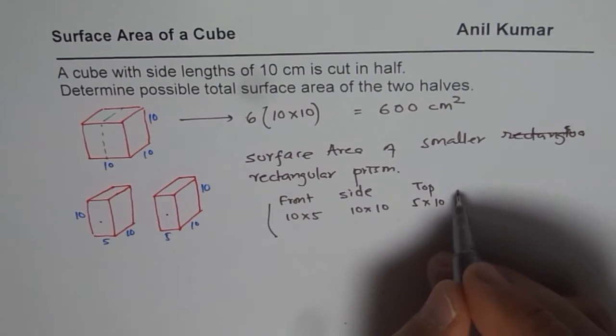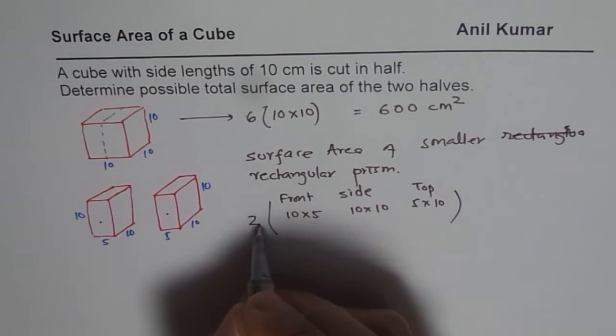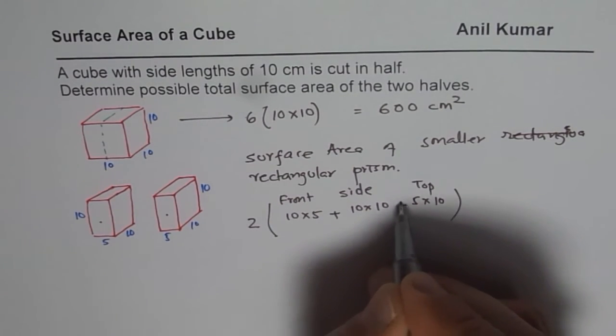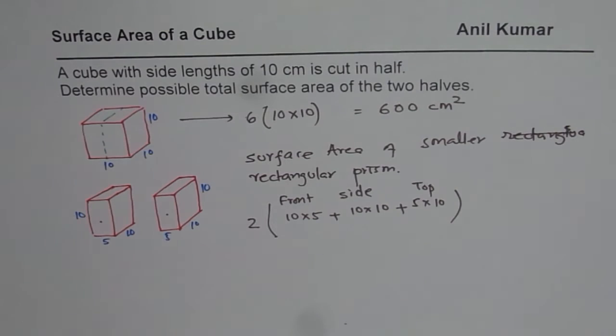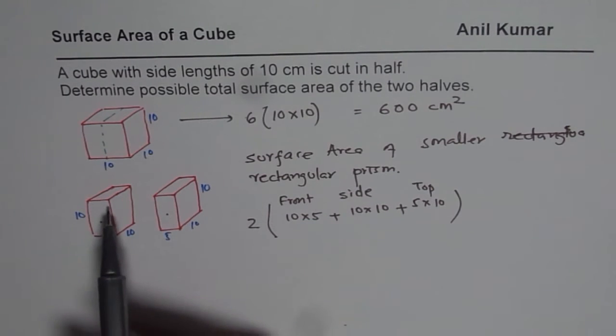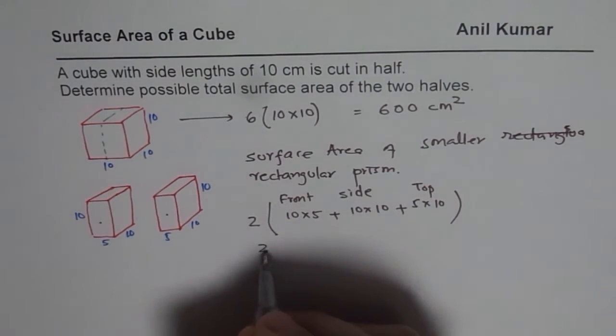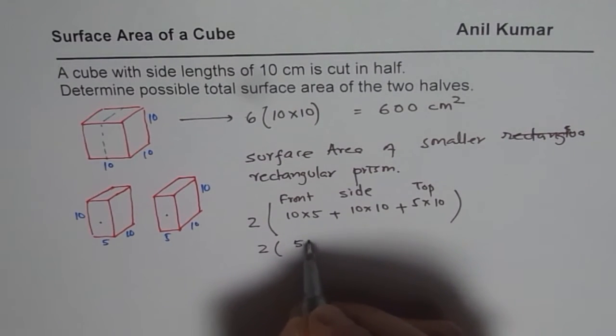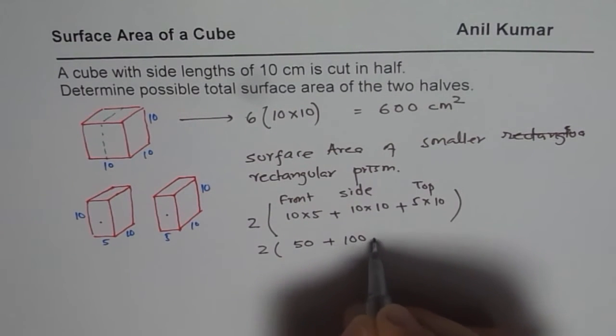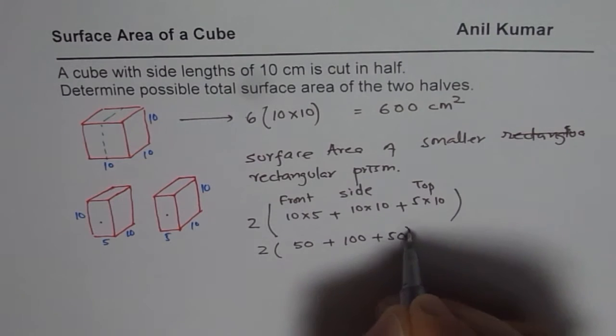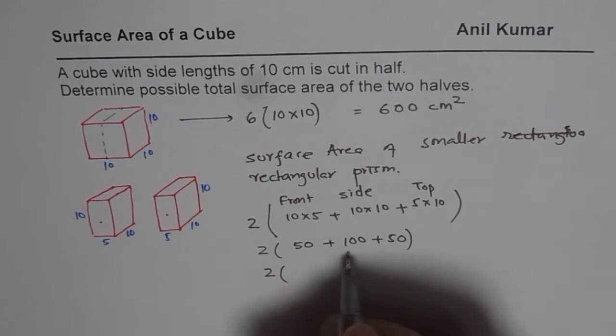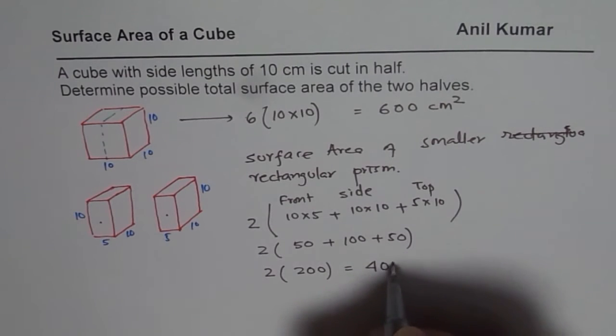So we have 2 of each kind. So we can multiply by 2 and add these up. So that is how we find the surface area of the smaller piece. So that is 2 times (50 plus 100 plus 50). So that is 2 times 200. And that gives you a value of 400.